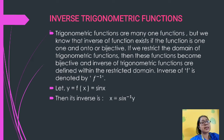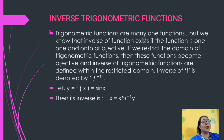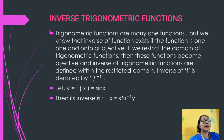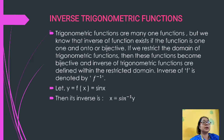Trigonometric functions are actually many-one functions, but we know that for an inverse function to exist, the function must be one-one and onto — that means it should be bijective. So sin inverse, cos inverse, tan inverse — all these inverses are actually not one-one. But if we restrict the domain of these trigonometric functions, then the function becomes bijective and the inverse of these trigonometric functions are then defined within the restricted domain.